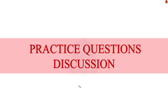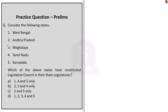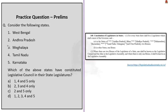Now let us move to the Prelims Practice Question session. Consider the following states: 1. West Bengal, 2. Andhra Pradesh, 3. Meghalaya, 4. Tamil Nadu, 5. Karnataka. Which of the above states have constituted a Legislative Council in their state legislatures? Pay close attention to the question — it asks which states have constituted a Legislative Council, and not to which states the constitution provides for the existence of a Legislative Council, because the answer to both these questions is different.